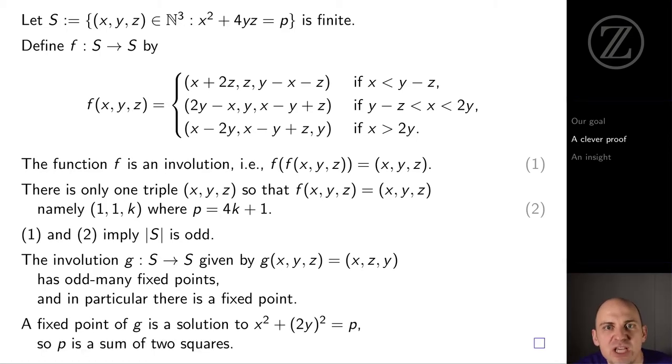But a fixed point of g is a triple where the last two components are the same, like (x, y, y). So having found a fixed point of g, we've expressed p as x squared plus 2y squared, which is what we wanted. A prime p, 1 mod 4 is a sum of two squares. It's an amazingly clever argument.